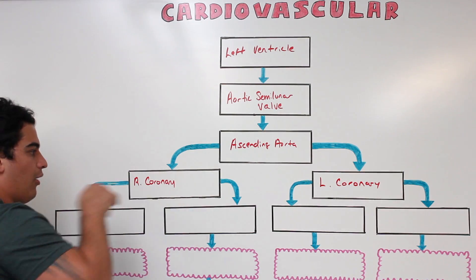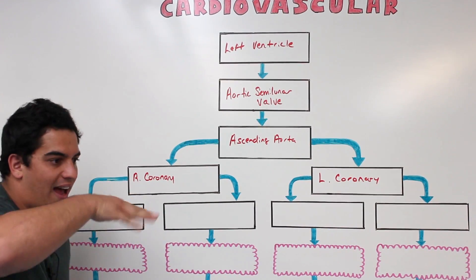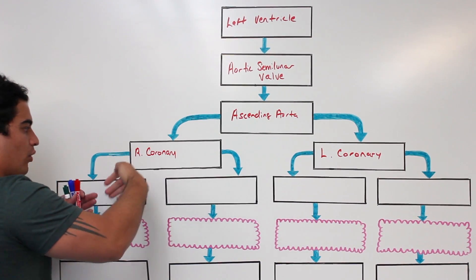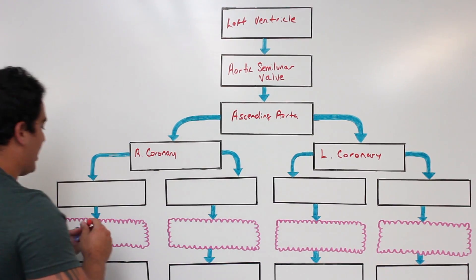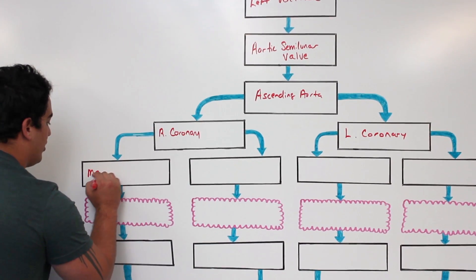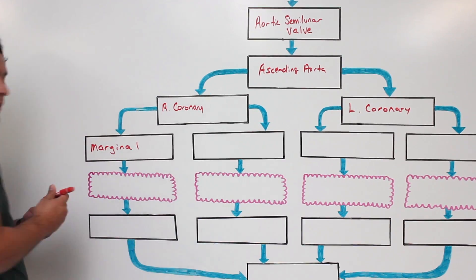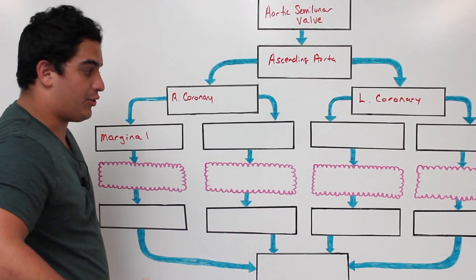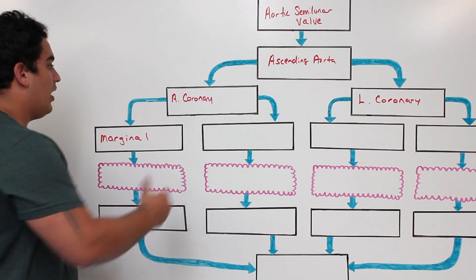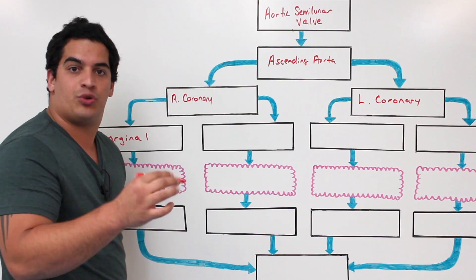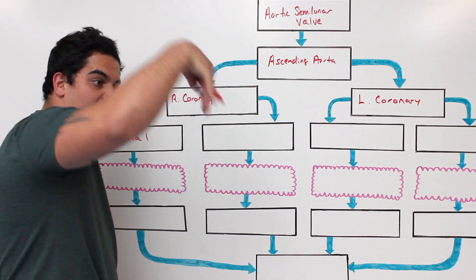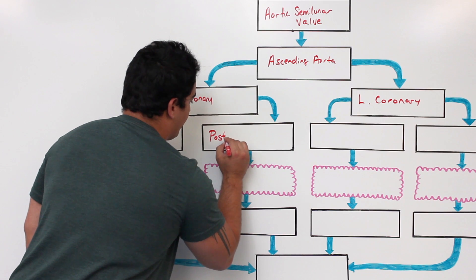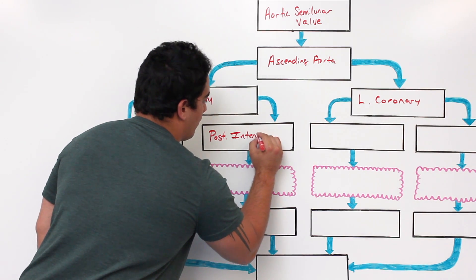The right coronary artery moves down a fat-filled groove called the coronary sulcus. As it runs down the sulcus it gives off branches. One branch on the right side of the heart is called the marginal artery, which supplies some of the right ventricle and the lateral and inferior part of the right ventricle. Another branch is called the posterior interventricular artery, which continues around and supplies the posterior aspect of the heart.